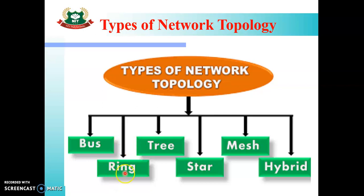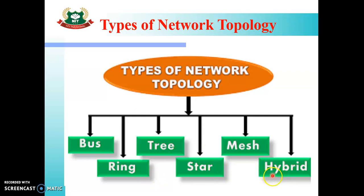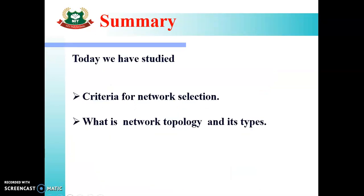Tree topology is called so because its structure is like a tree, that is why it is called tree topology. Star topology is called so because the nodes or computer systems are connected in a star fashion. Hybrid topology is the combination of two or three topologies — that is why it is called hybrid topology. So all these are the types of network topology.